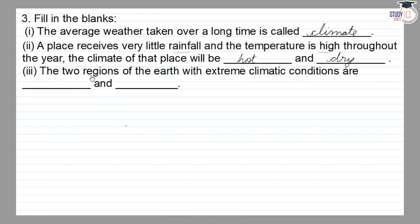Third one is, the two regions of the Earth with extreme climate conditions are dash and dash. Two regions, the Earth's climate conditions, how are they?